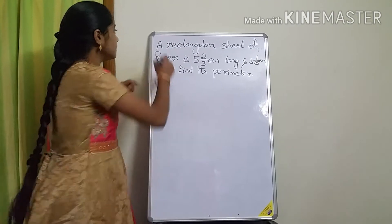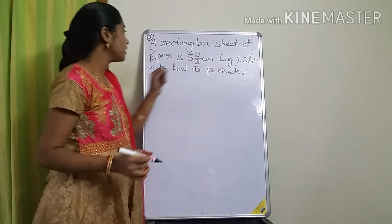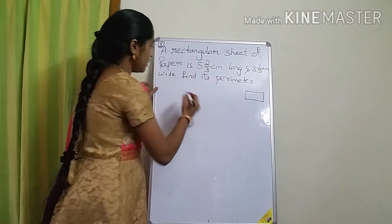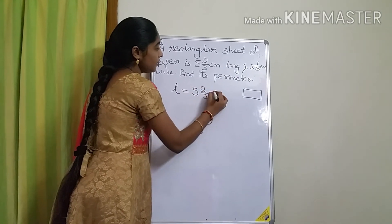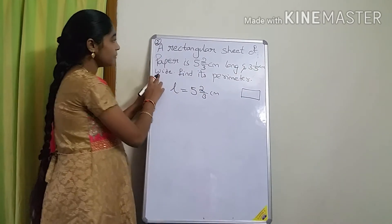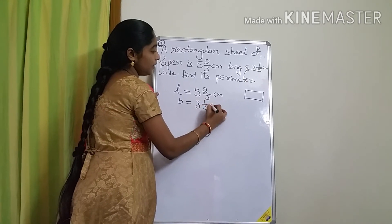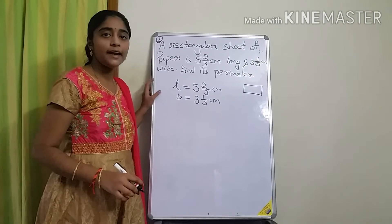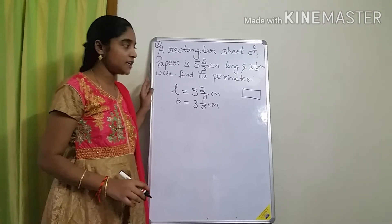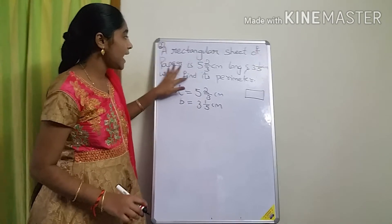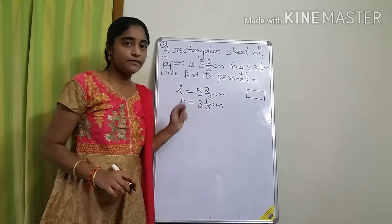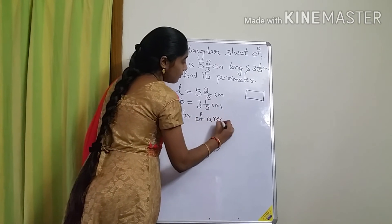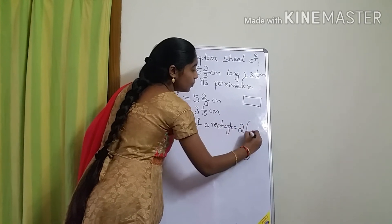Second question: A rectangular sheet of paper is 5⅔ centimeters long and 3⅕ centimeters wide — that means the breadth is 3⅕ centimeters. So the length is 5⅔ cm and the breadth is 3⅕ cm. In 6th class you generally got whole numbers for length and breadth, but here they give fractional form. They ask you to find the perimeter.